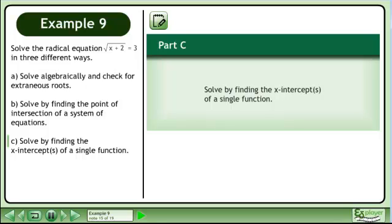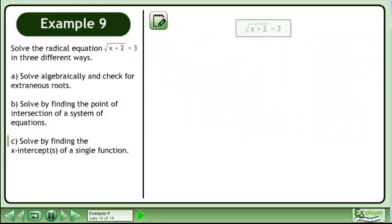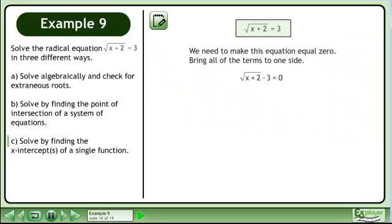In part C, we'll solve by finding the x-intercepts of a single function. We need to make this equation equal 0, bring all of the terms to one side. This gives us the square root of x plus 2 minus 3 equals 0.